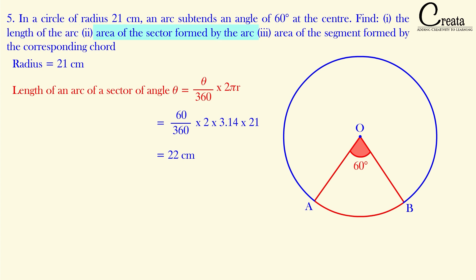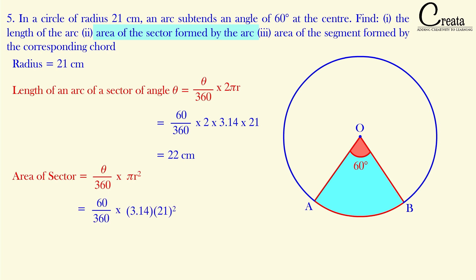In the second part, we have to find the area of the sector formed by this arc. This is the sector — the region between the two radii and the arc. Using the formula (theta / 360) × π r² with theta = 60° and radius = 21 cm, on solving we got area of the sector = 231 cm².